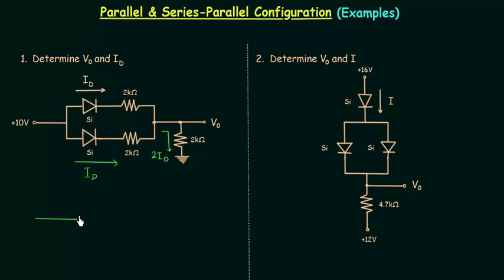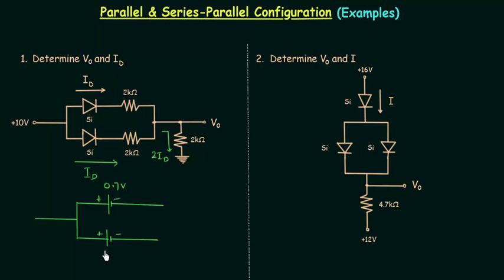I will quickly draw this circuit in which the diodes are replaced by their equivalent model. We are using silicon diodes, so the barrier potential difference is equal to 0.7V for the first diode and 0.7V for the second diode as well. The resistance in this branch is 2 kilo ohms, and 2 kilo ohms in the second branch.